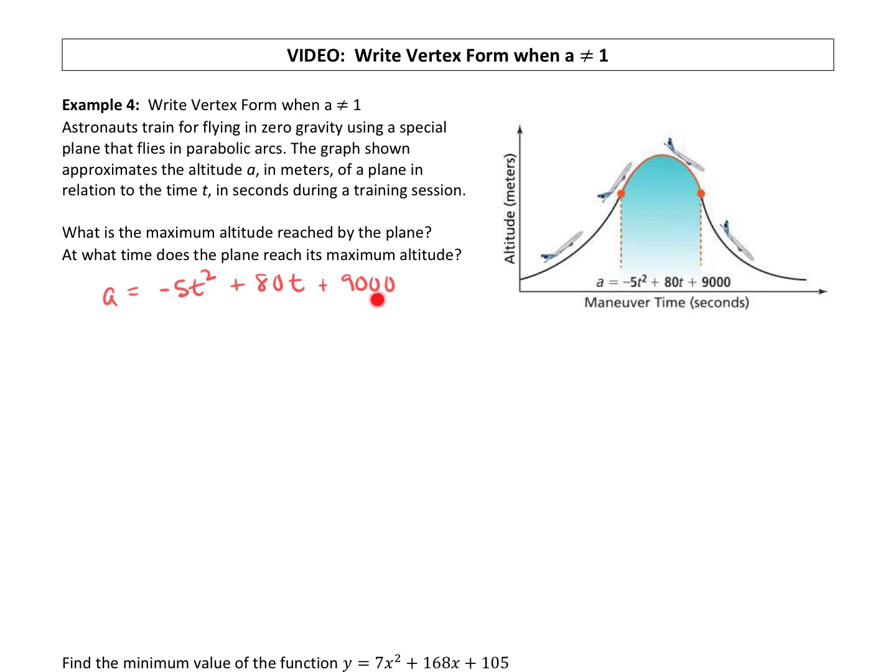So I can't just divide everything by negative 5 because that would create a fraction on this side, an a over negative 5. And we don't really want to go there with this. So we're going to complete the square starting with getting that 9000 kind of out of our way over to the other side.